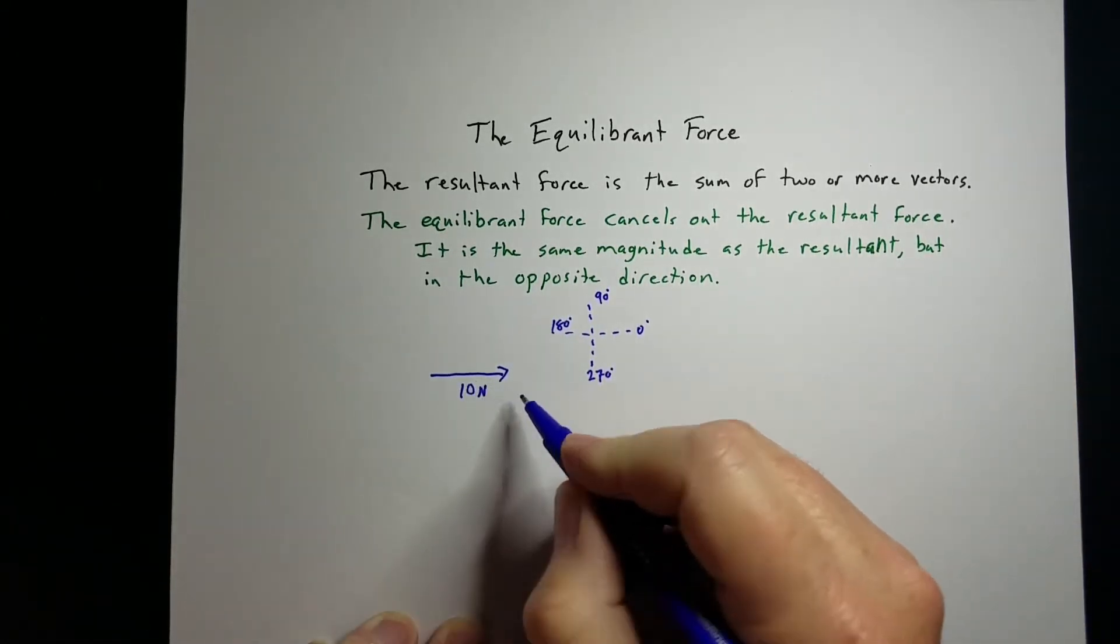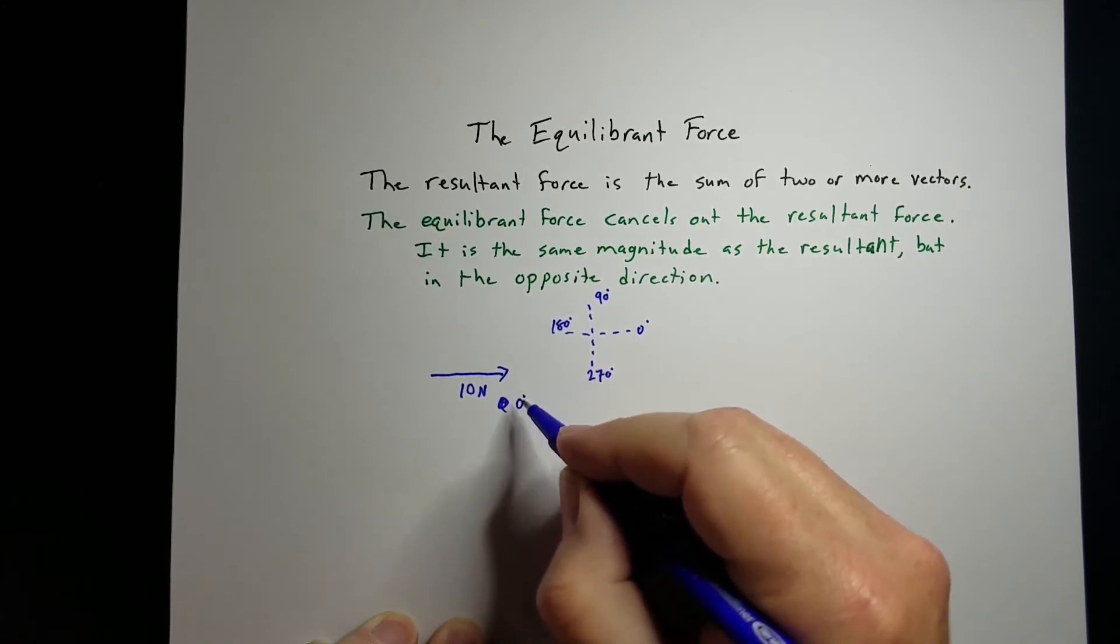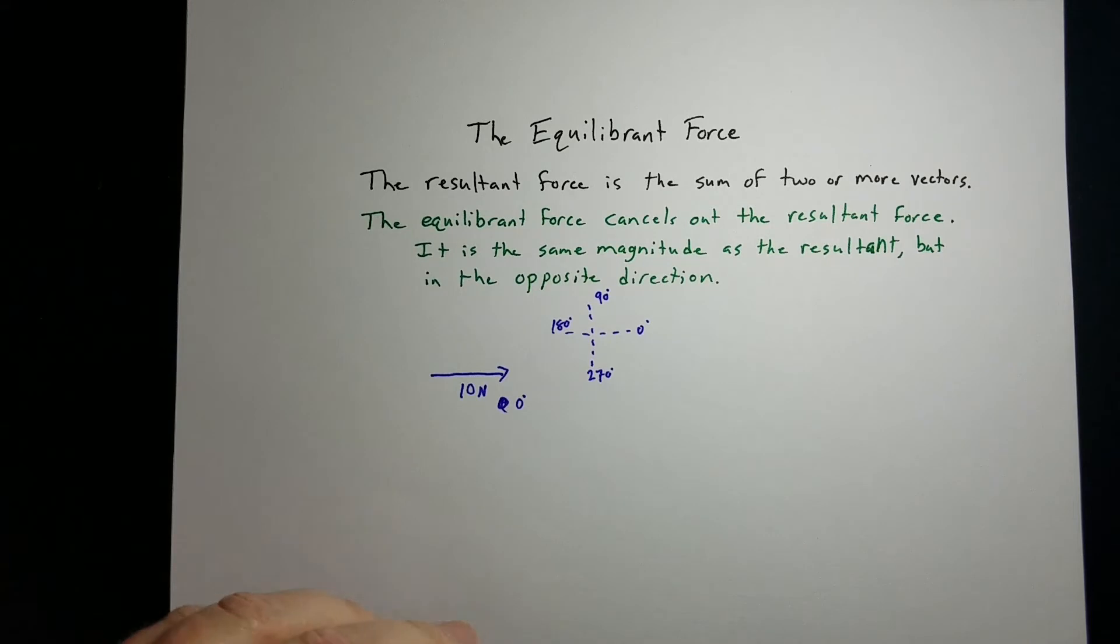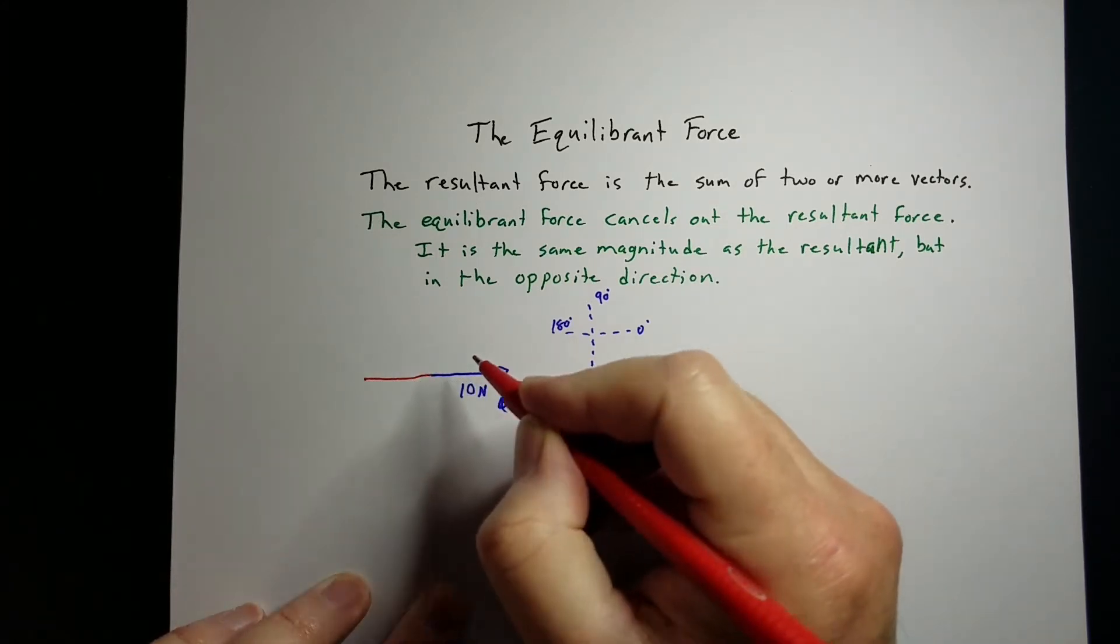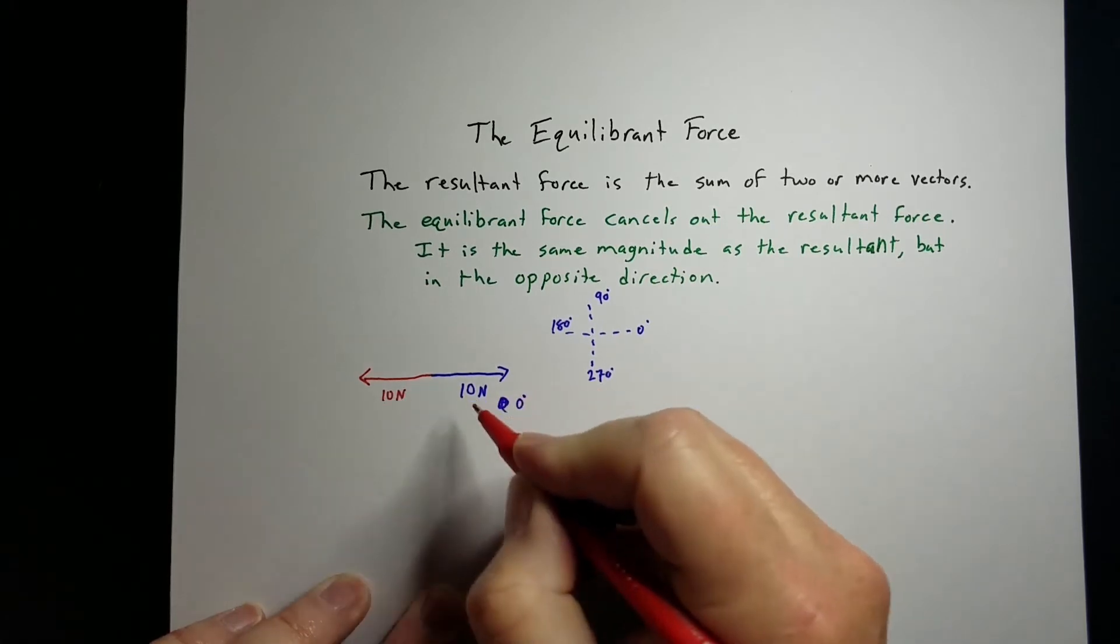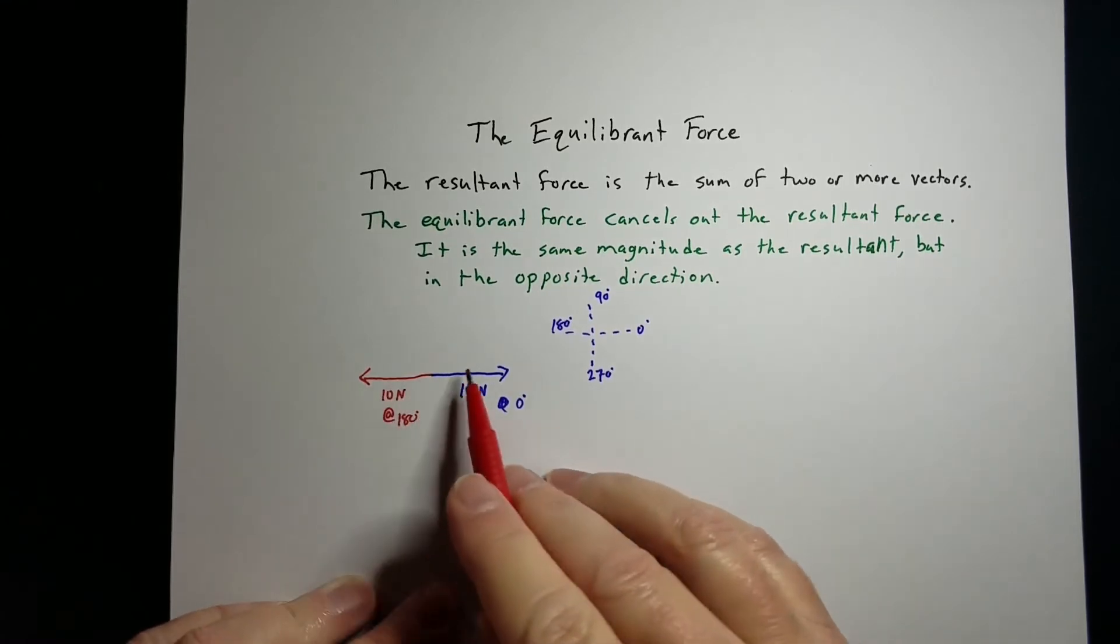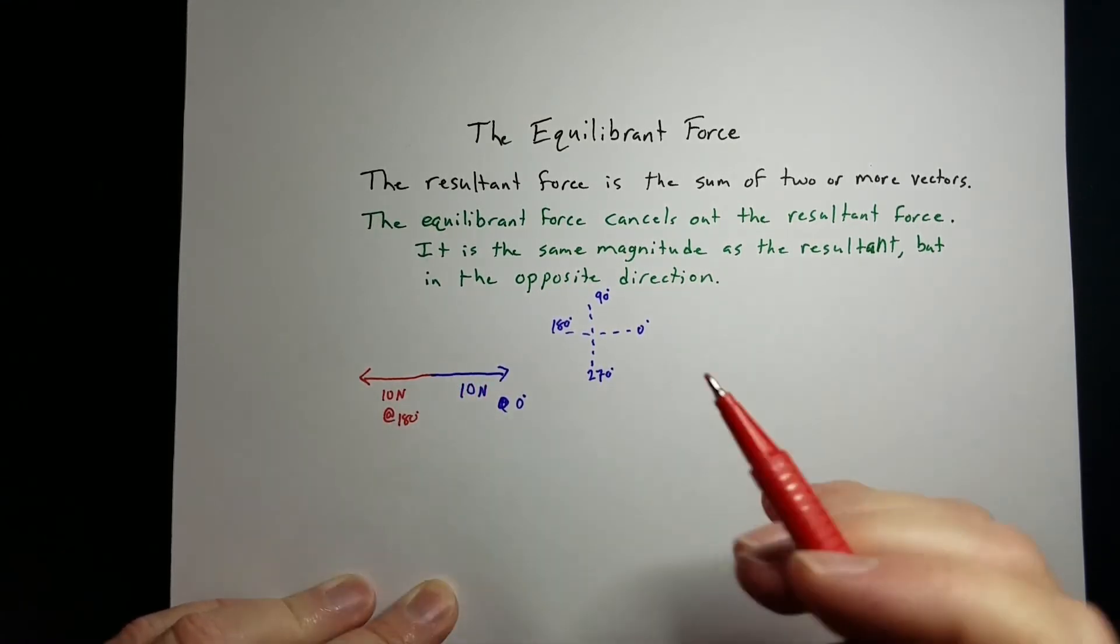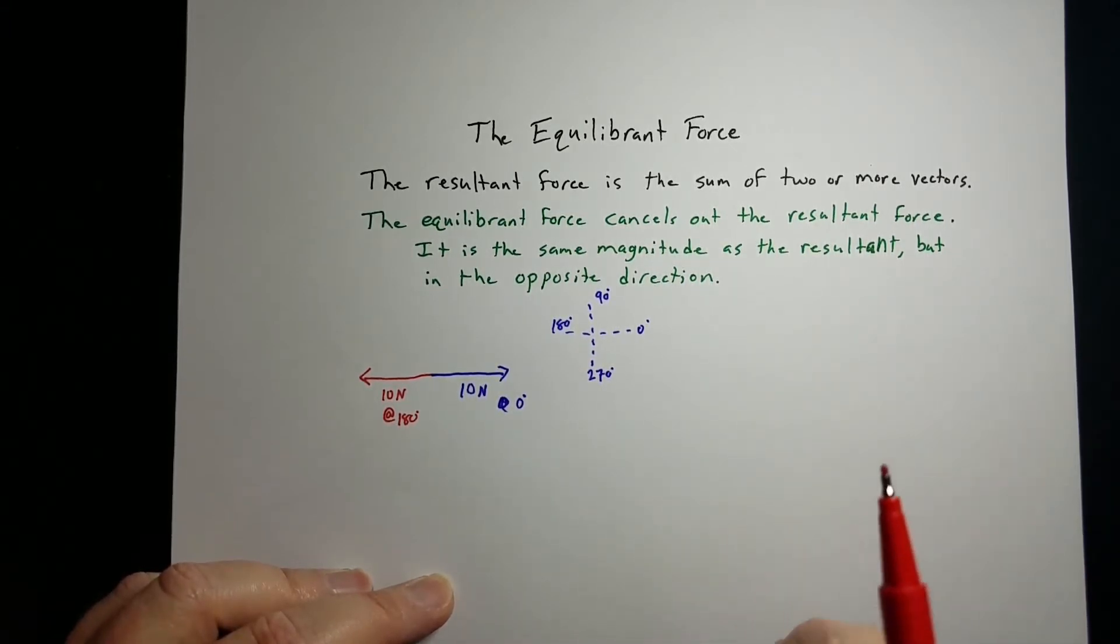If I have a force at 0 degrees and I want to cancel it out, then my equilibrium would be in the opposite direction, same magnitude but opposite direction, so it would be at 180 degrees. Those two would cancel each other out, and there's no net force. The equilibrium creates a net force of 0 on your object.